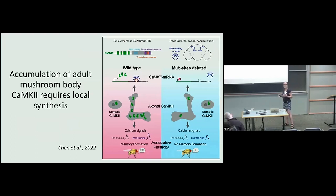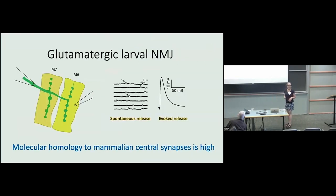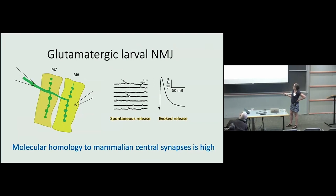We were also interested in the activity dependence of the process and wanted to go further. We needed a synapse that was a little more cell biologically accessible, so we went back to the larval third-instar neuromuscular junction. In fly larvae, single motor neurons innervate muscles, and we work primarily on muscles six and seven. These muscles are very easy to record from — you can stick an electrode in and record spontaneous release, and stimulate the motor nerve to look at evoked release.